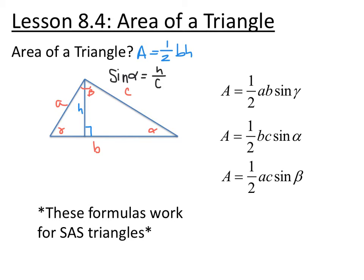If we solve for h, multiply both sides by c, you get that h equals c times sine of alpha. Going back to our one-half base times height formula and replacing h with c sine alpha, we have one-half side b times side c times sine of alpha. Now we have another formula for the area of a triangle.